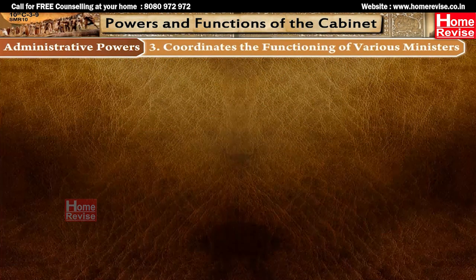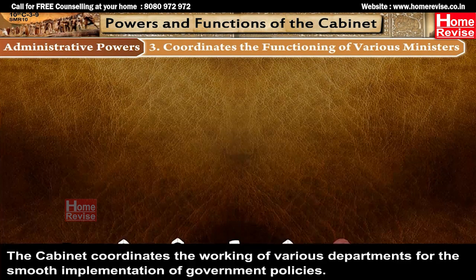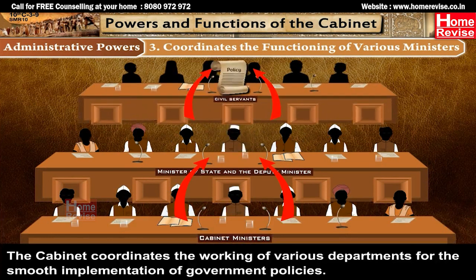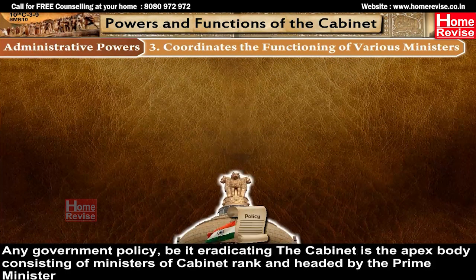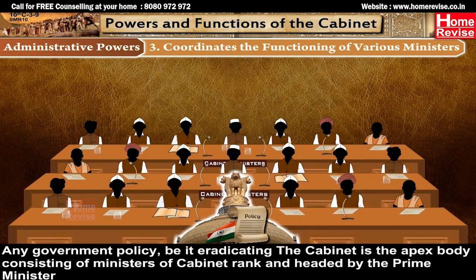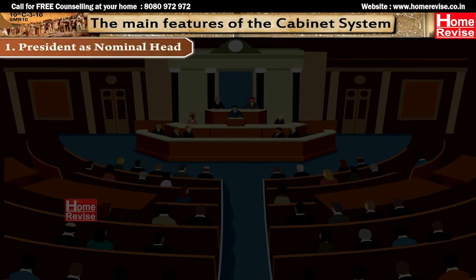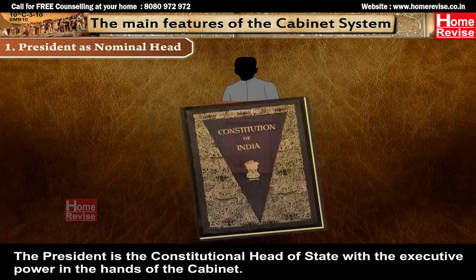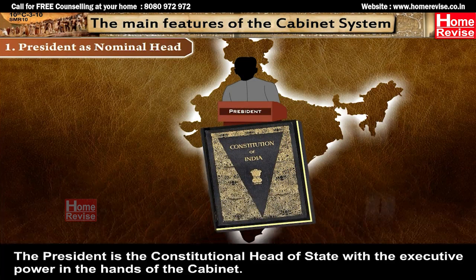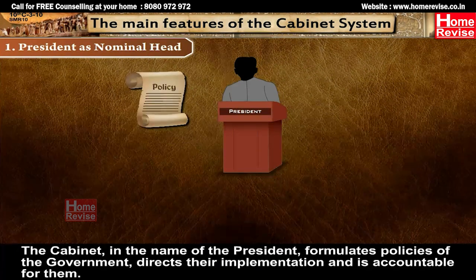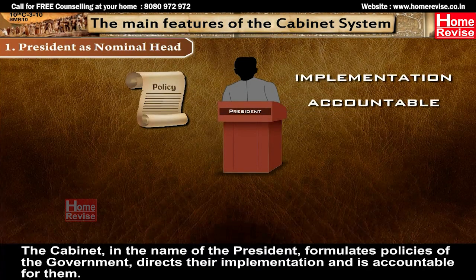The Cabinet coordinates the working of various departments for the smooth implementation of government policies. The Cabinet is the apex body consisting of Ministers of Cabinet rank, headed by the Prime Minister. The main features of the Cabinet system are: (1) President as Nominal Head — the President is the Constitutional Head of State with executive power in the hands of the Cabinet. The Cabinet, in the name of the President, formulates policies of the government, directs their implementation, and is accountable for them.